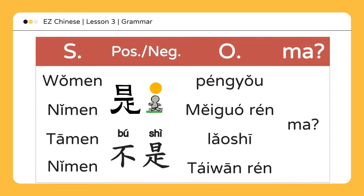A question can also be formed by using 是不是, or by adding 吗 to the end of the sentence. For example: 你是不是老师? Or 你是老师吗? Are you a teacher? 是 can also be used to confirm something you have assumed. For example: 你不是老师吗? Aren't you a teacher?